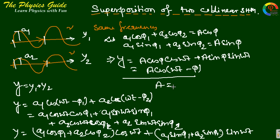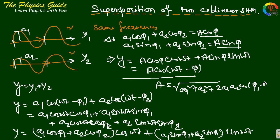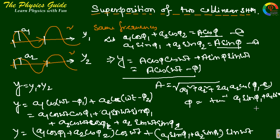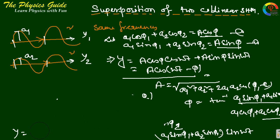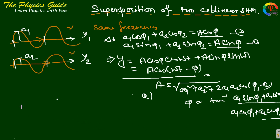This result has the same form as the original oscillations. By squaring and adding the two substitution equations, the resultant amplitude is A = √(a1² + a2² + 2a1a2 cos(φ1 − φ2)). The resultant phase is φ = tan⁻¹[(a1 sin φ1 + a2 sin φ2) / (a1 cos φ1 + a2 cos φ2)].